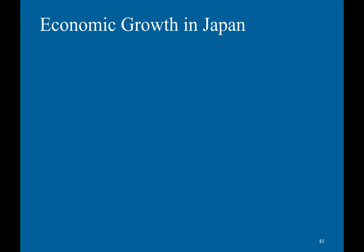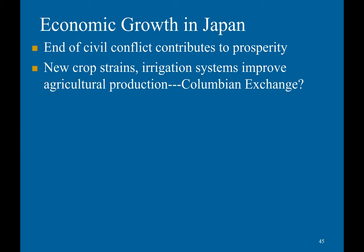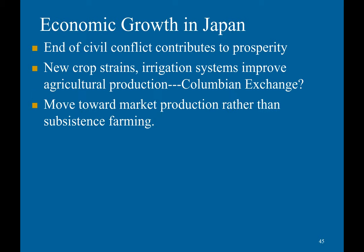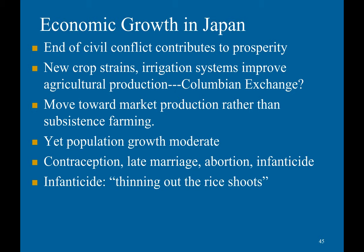The end of civil conflict contributed to prosperity, with new crop strains and irrigation systems improving agricultural production — probably thanks to the Columbian Exchange. Japan moved towards market production beyond subsistence farming, yet the population grew only moderately, as the Japanese engaged in contraception, late marriage, abortion, and infanticide to control their population.